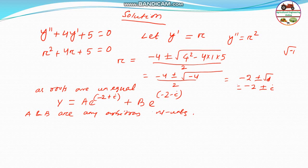So y is equal to e to the power minus 2x, factored out because it is common to both terms. This leaves A·e to the power ix plus B·e to the power minus ix inside. Since we know that e to the power ix equals cos x plus i·sin x, we apply Euler's formula.